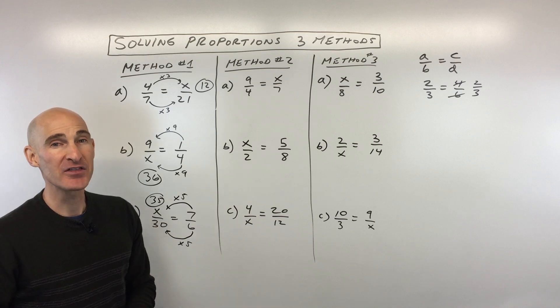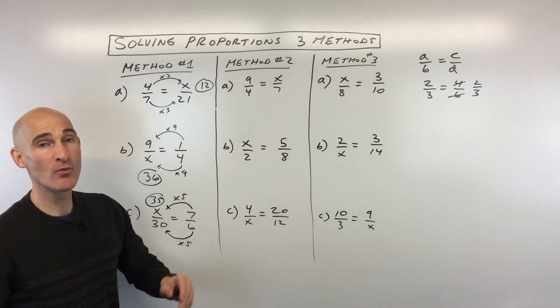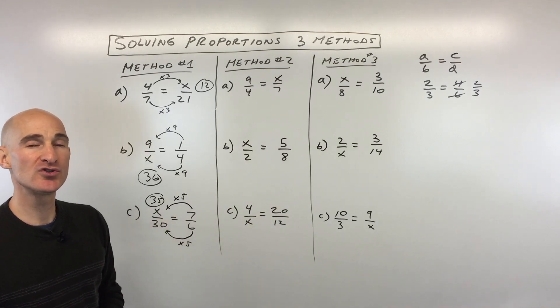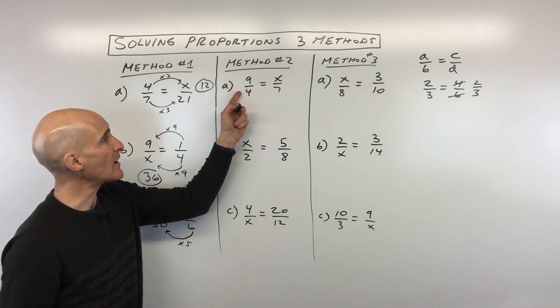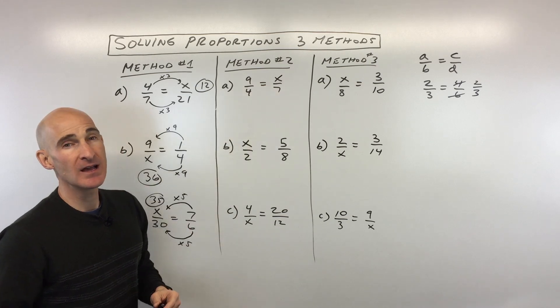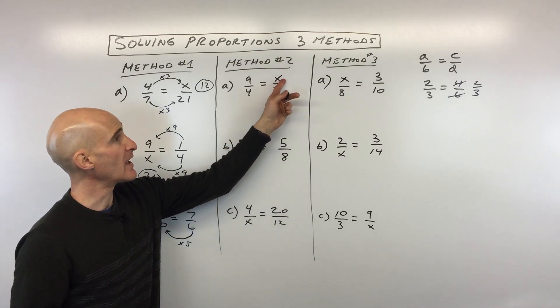Okay, so now this is not the most favorite method, but stay with me, we're going to do two more different techniques. And you can of course use the one that you like the best. So method number two, we've got 9 over 4 equals x over 7. Our goal is to find that variable, that unknown.